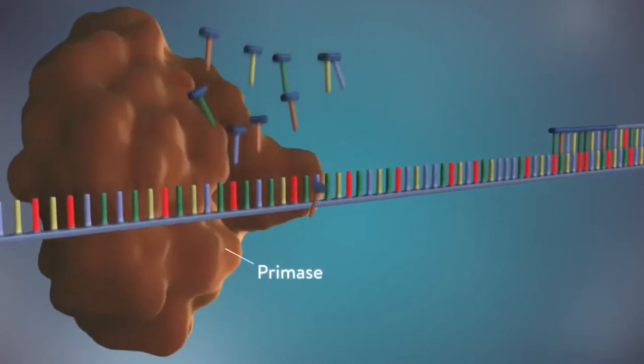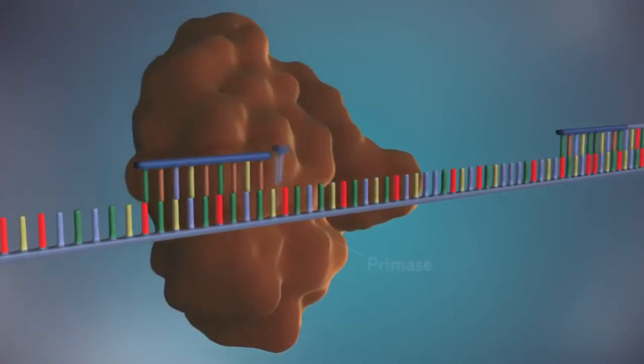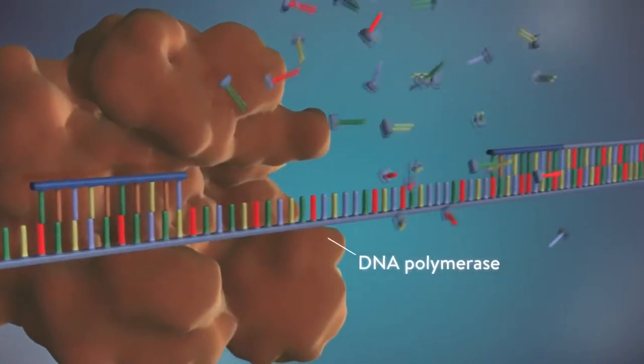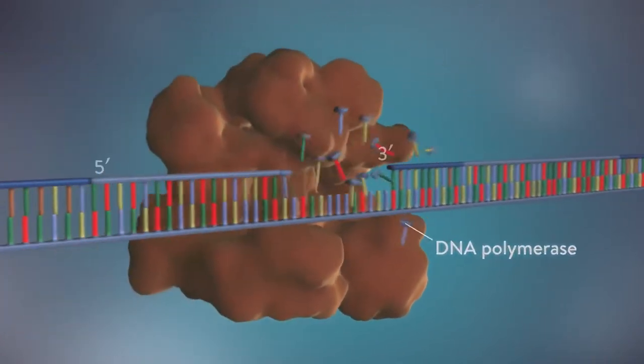The next primer is then added further down the lagging strand. Another Okazaki fragment is then made, and the process is repeated.